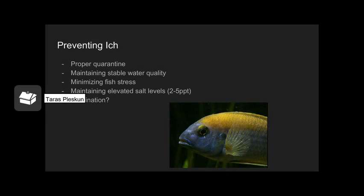The best way to deal with Ich is to prevent it from entering your tank in the first place, or if it does enter, to prevent it from infecting your fish. Proper quarantine is paramount — know the source of your fish, trust your local fish store, know the origin of the fish, how long it's been there, and the environmental conditions of the tank you're getting it from. Being able to identify white splotches helps you make a good decision upfront. Maintaining stable water quality is key, as most fish can fight off Ich when healthy, but it's when something goes wrong and fish get stressed that Ich is able to infest. Minimizing fish stress is paramount to preventing it long term.